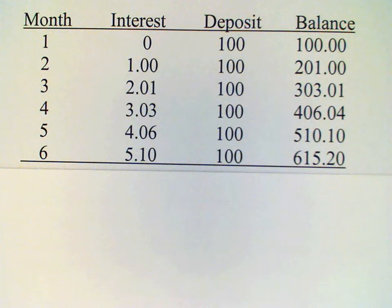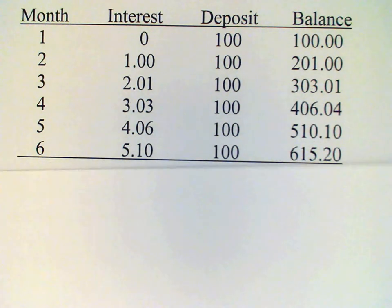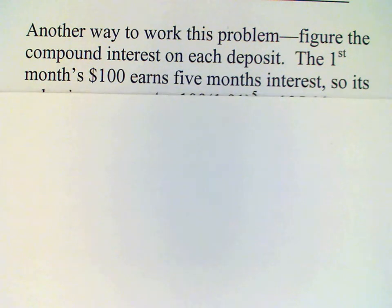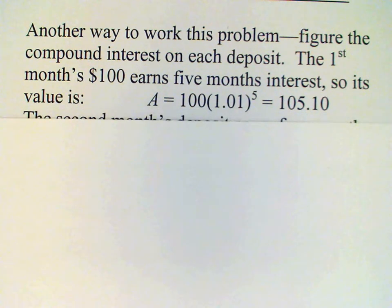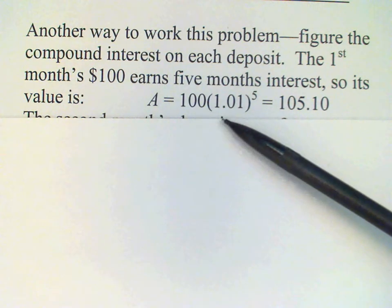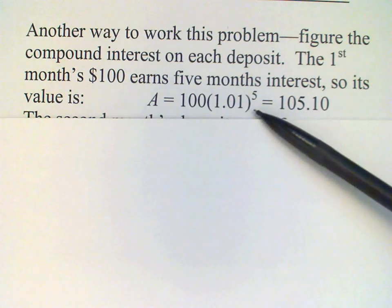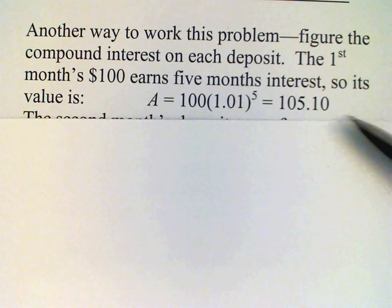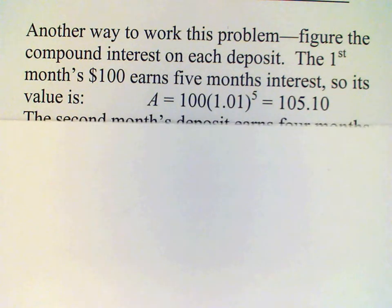Now what I want to do is show you a different way to come up with the same result. Another way to calculate this number is to work out the compound amount for each deposit. So the first month's $100 will earn five months of compound interest, and we have a formula for that: the initial deposit $100 times 1 plus i raised to the n. In this case i is 1%, so we have 1.01 raised to the 5, meaning five months of compounding. That calculation gives $105.10.